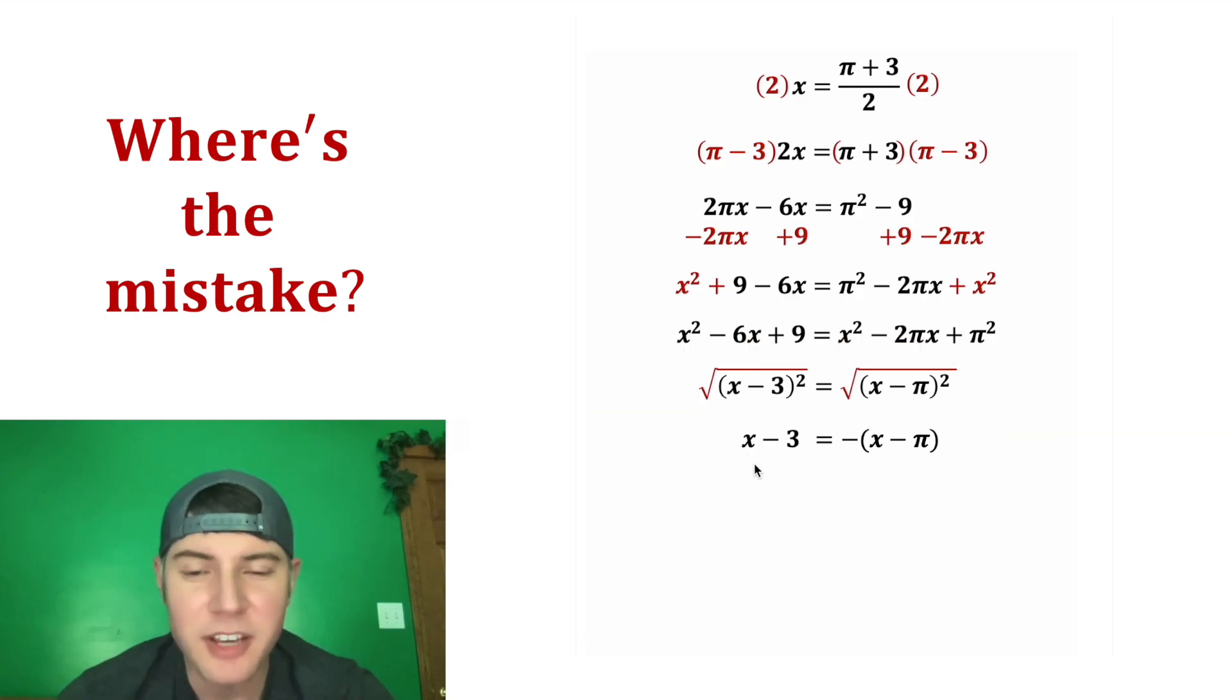And now let's work through this. On this side we can bring down the x minus 3. And then on the right hand side this negative distributes to give us negative x. And then negative times negative pi is equal to positive pi.